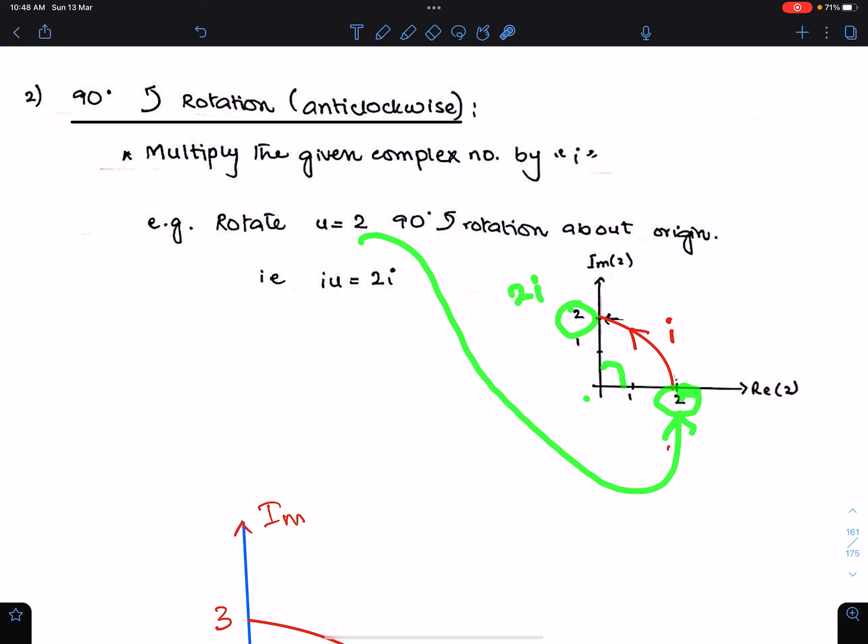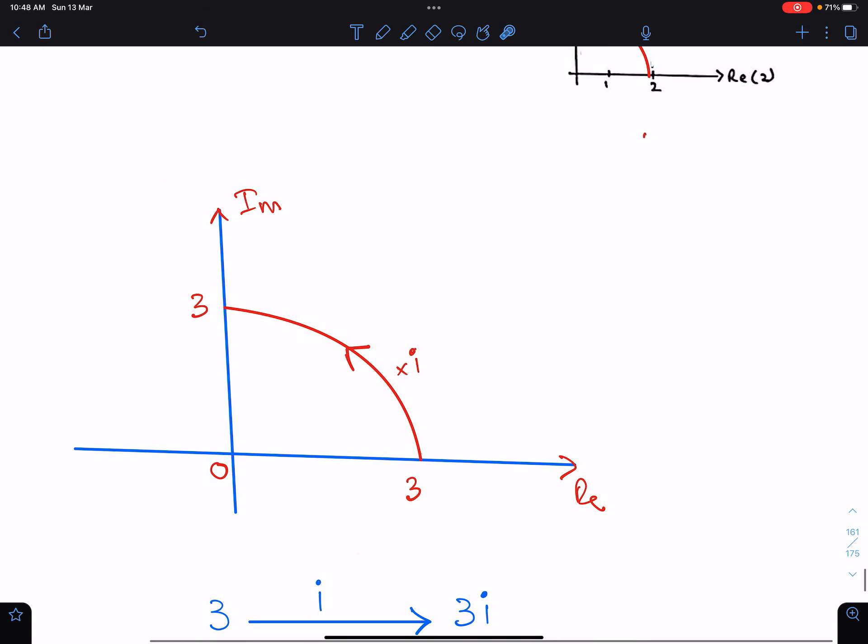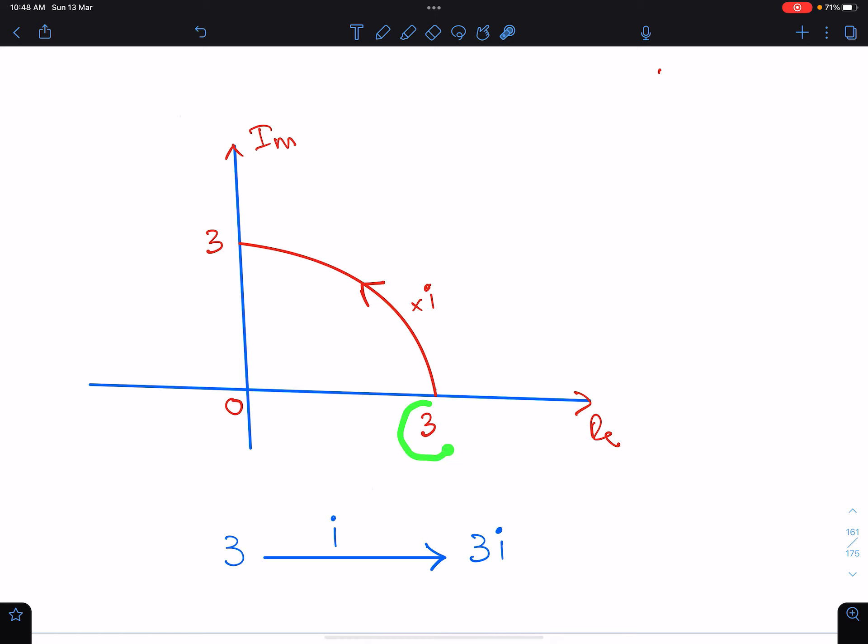So this becomes 2i, multiplied by positive i. Similarly, when this 3 is rotated 90 degrees in anticlockwise direction about the origin, then this 3 will come here. This will become 3i. So this is multiplied by positive i.